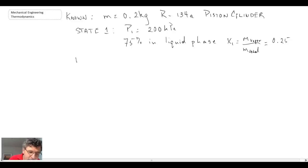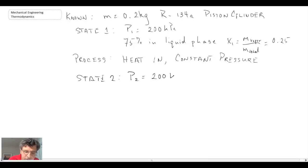The process underway is one of heat addition at constant pressure. At state 2, the pressure remains at 200 kPa. We were told it was when all of the liquid had turned to vapor, which implies we've moved to the saturated vapor line where the quality at state 2 is 1.0. So x2 equals 1.0.